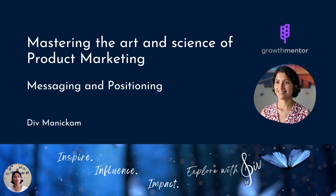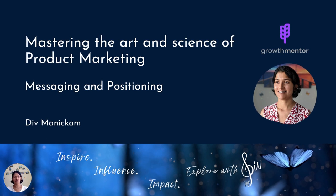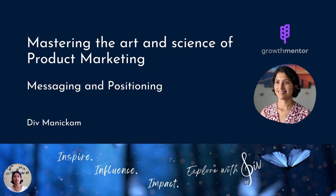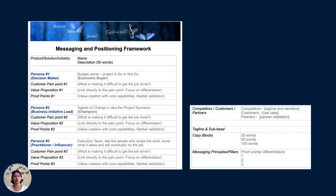The first is messaging and positioning. If there's one thing that we need to do right as product marketing, it's getting our messaging and positioning. This has an influence on what goes on your website, all the way to how you pitch and talk about your story. I'll be walking through a framework with some examples so you can take this into action, starting with identifying your persona, understanding your customer pain point, value proposition, all the way to creating your tagline, subheading, and copy blocks.